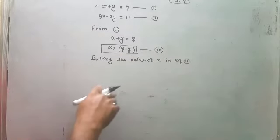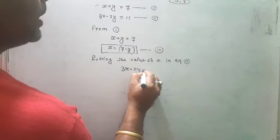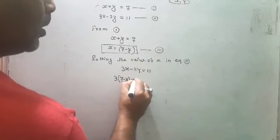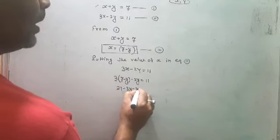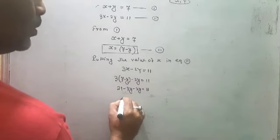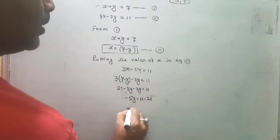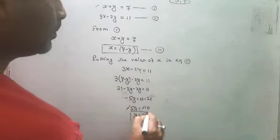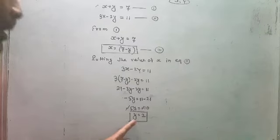Putting the value of x in equation two: 3x minus 2y is equal to 11. In place of x, write 7 minus y: 3(7 minus y) minus 2y is equal to 11. So 21 minus 3y minus 2y is equal to 11. That gives minus 5y is equal to 11 minus 21, so minus 5y is equal to minus 10, and the negatives cancel: y is equal to 2.